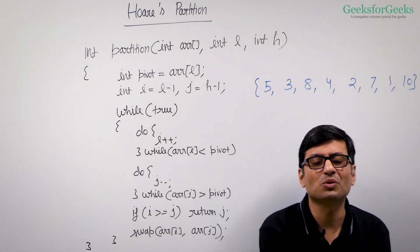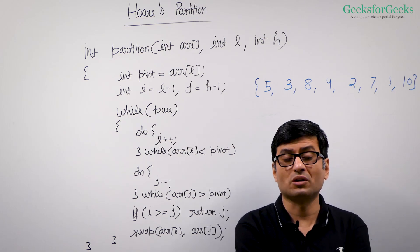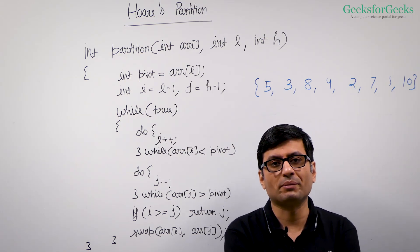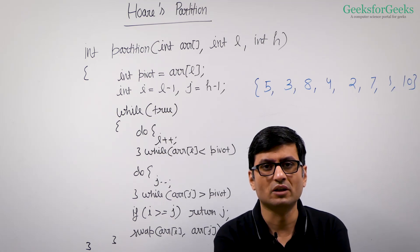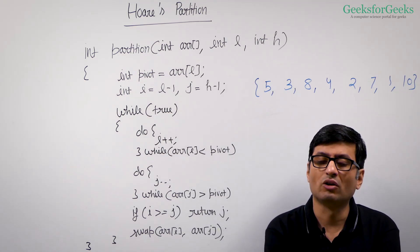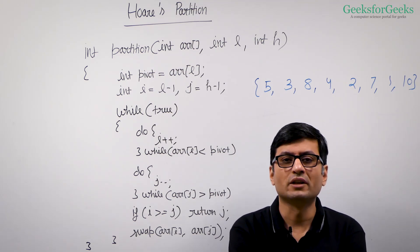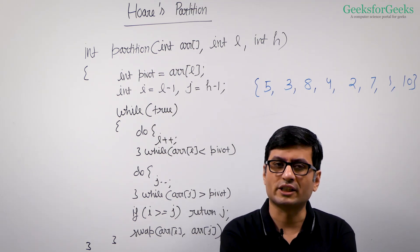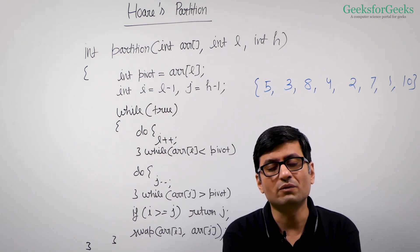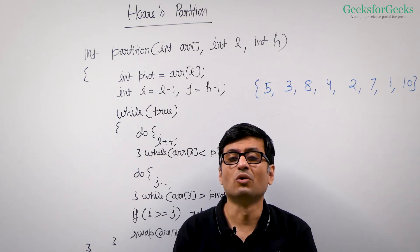In the previous videos, we talked about the naive partitioning method and the Lomuto partitioning method. In this video, we are going to talk about Hoare's partition method. Hoare's partition method works much better than Lomuto partition method. Like Lomuto partition, this is also O(1) extra space and O(n) time, with only one traversal of the input array.